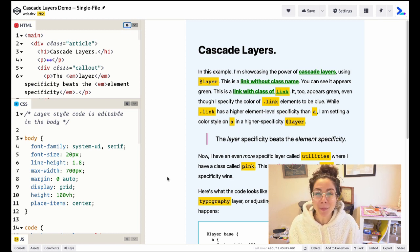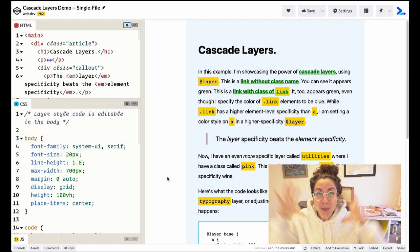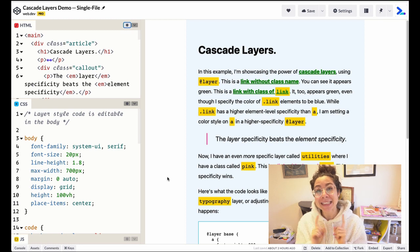So hopefully this fixes some specificity issues that you run into. There are some caveats. This does not solve scoping. So if you think it solves scoping, it does not. You still have to scope things to parents and to make sure that the styles don't leak out of the scope unintentionally, but it does help with specificity concerns.